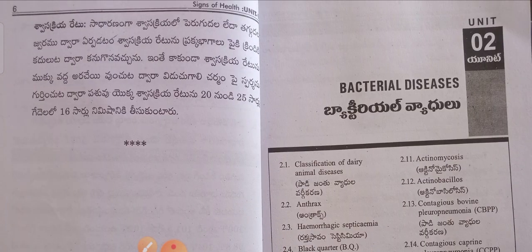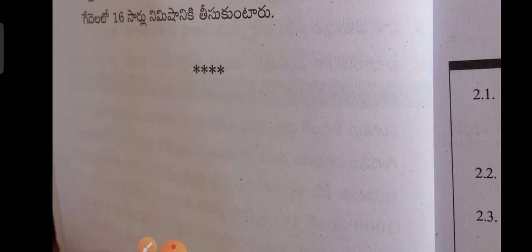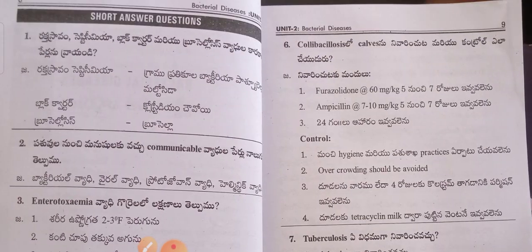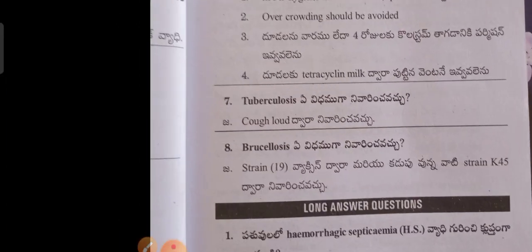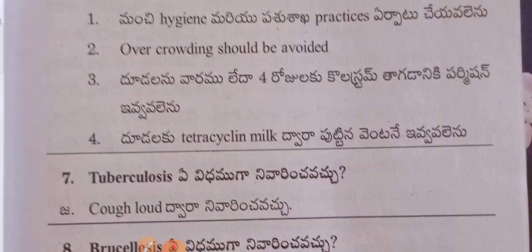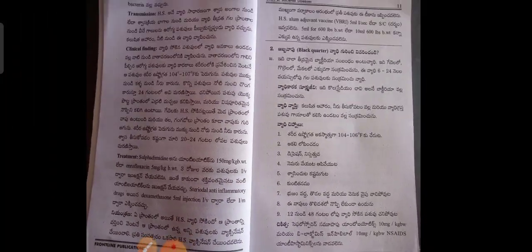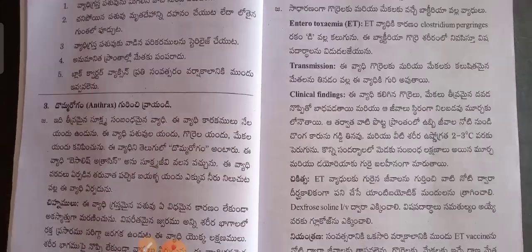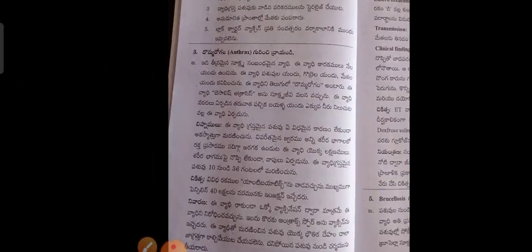Next, Second Unit: Bacterial Vyadhi — Bacterial Diseases. Topics include Brucellosis and Anthrax.